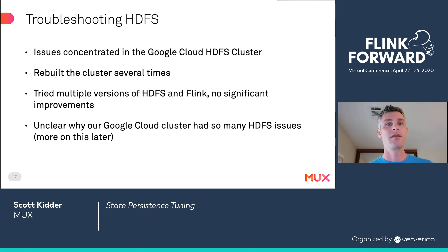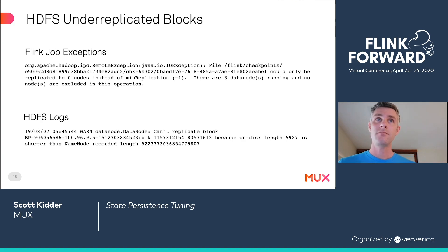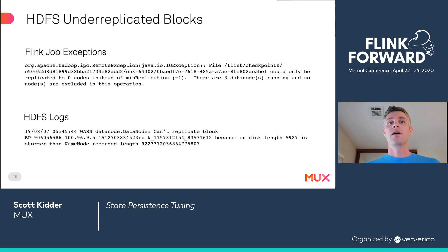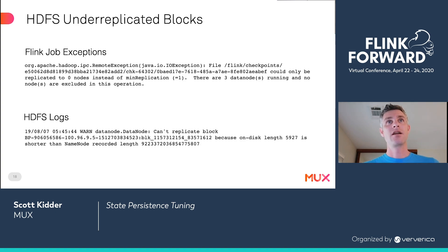The main issues we had with HDFS as a state backend were with the HDFS cluster reporting under-replicated blocks. HDFS ensures that data is replicated across a configurable number of data nodes for it to be considered written durably, and Flink also ensures that data has been written durably before allowing the application to continue advancing. If you write to HDFS but the data is not really written, you could end up needing to restore from a checkpoint where that data isn't there. So Flink is doing the right thing by halting processing when HDFS is unable to ensure the data is actually there. Exceptions in the Flink apps were an indication that data nodes were running but unavailable, and HDFS logs would indicate that data blocks could not be written or replicated.